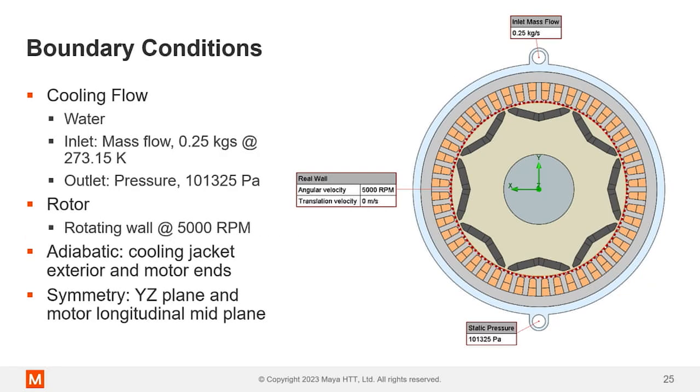There's a couple boundary conditions. The important bit here is that we're cooling it with room temperature water basically into open space, 101.3 kilopascals. We simulated the rotor spinning at its rated 5,000 RPM and that makes sure that the heat losses that are coming out of the rotor are being distributed appropriately and that we're taking into account the air gap cooling effects on the rotor.